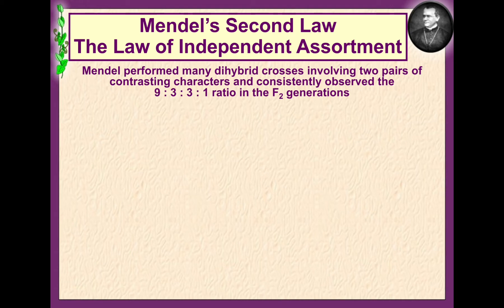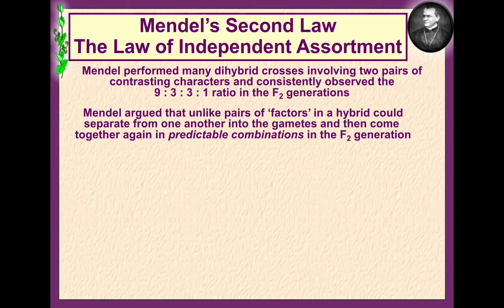In the last video we've already seen a dihybrid cross which resulted in the 9:3:3:1 ratio of traits. Mendel argued that unlike pairs of factors in a hybrid could separate out from one another into gametes and then come together again in predictable combinations in the second generation.